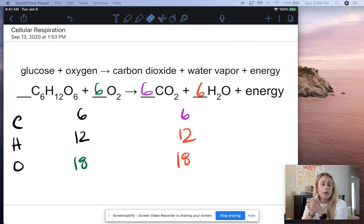So this is your equation for cellular respiration. And this is how we get our energy when we eat food. So we need to be able to get that energy from somewhere and we get it from glucose and oxygen reacting to form carbon dioxide, water vapor, and energy.